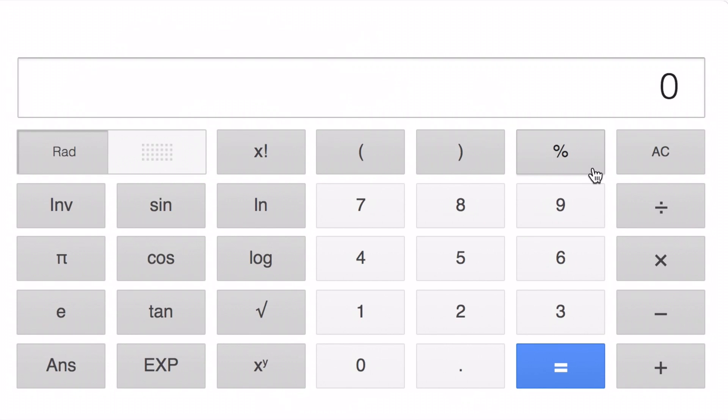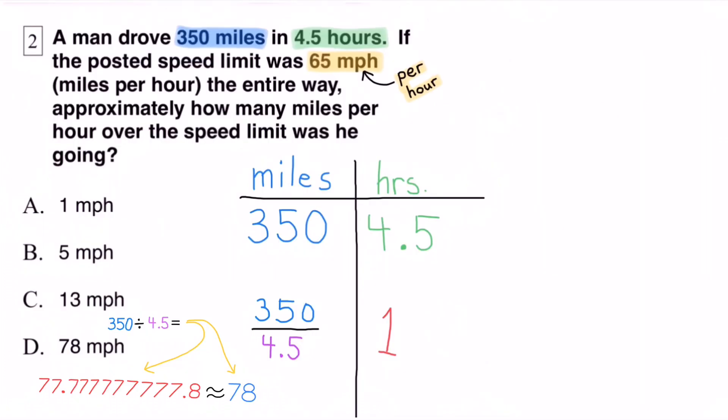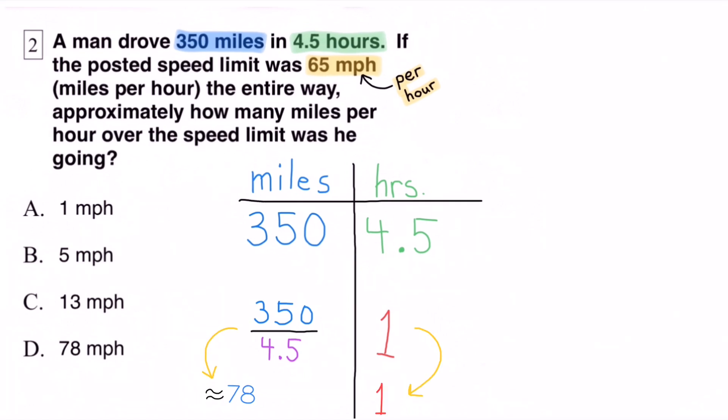You can also use a calculator to do this, and that would be 350 divided by 4.5. I'll show you what that looks like. 350 divided by 4.5 is not exactly 78, but it could round up to 78.